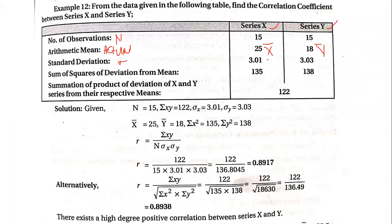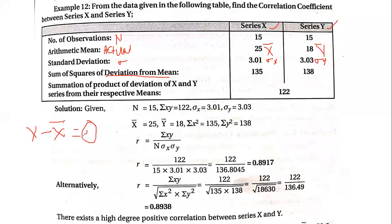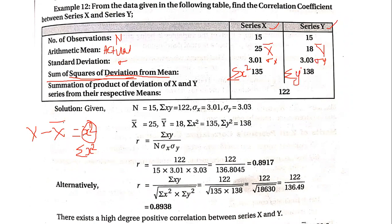Next, standard deviation is given — standard deviation of X and standard deviation of Y. Then sum of squares of deviation from mean: deviation from mean means x minus x-bar, which we denote by small x. Square of the deviation, then sum of square of deviation means sigma x-square. Sigma x-square is 135 and sigma y-square is 138.